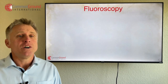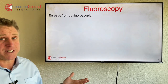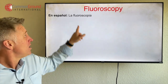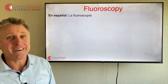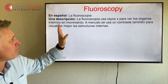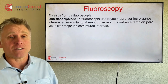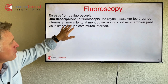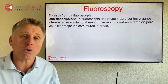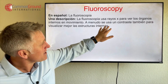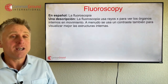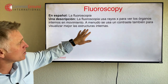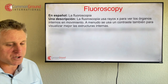Let's start with fluoroscopy — fluoroscopia. It's a tough word to say: fluoroscopia. Every letter is pronounced. Una descripción: La fluoroscopia usa rayos X — so the fluoroscopy uses x-rays — para ver los órganos internos en movimiento, to see the internal organs in movement. A menudo, often, se usa un contraste también — so you often use a contrast or a dye as well — para visualizar mejor las estructuras internas, to see the internal structures better.